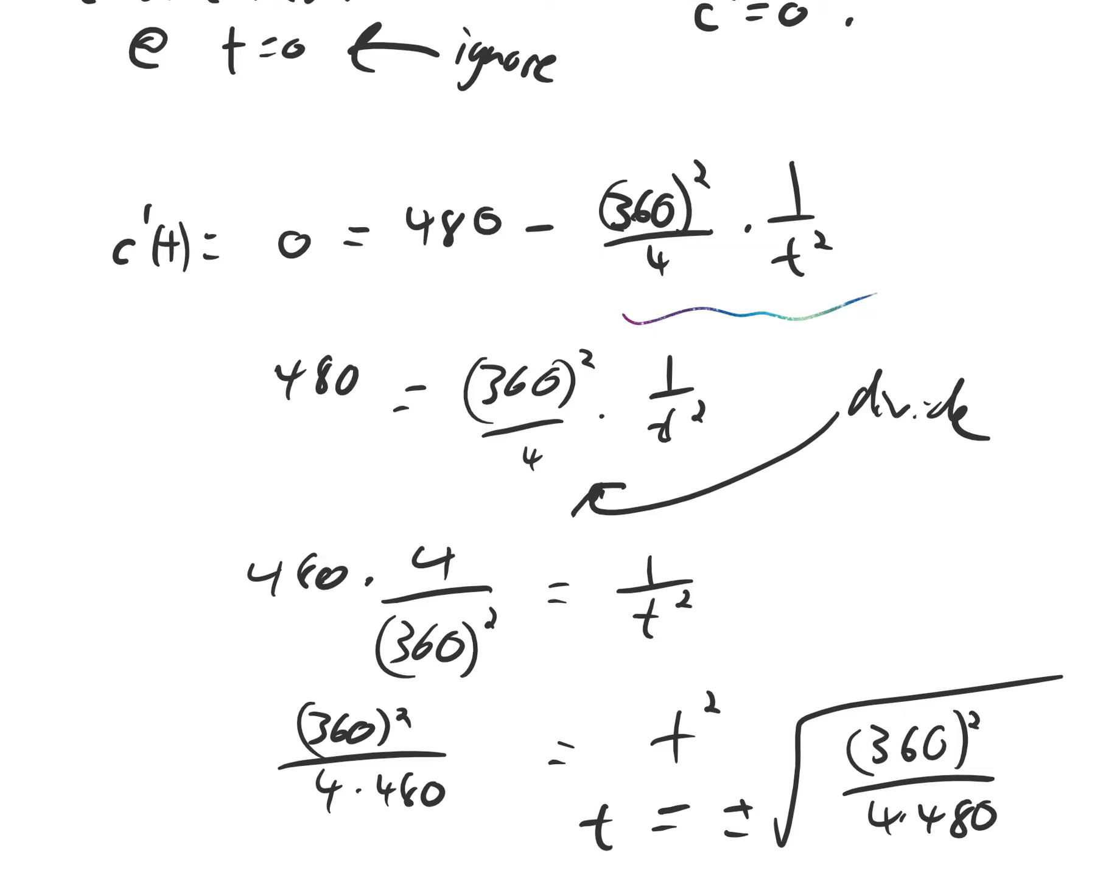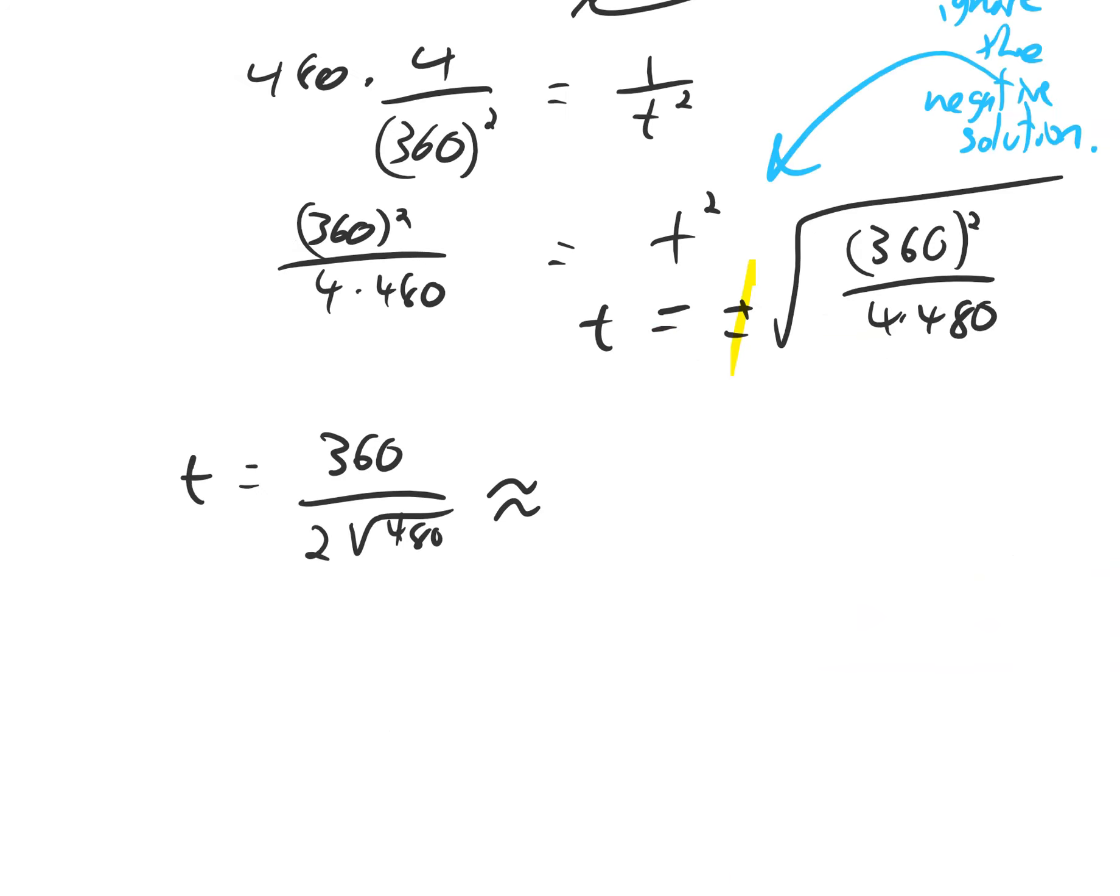Algebraically, it makes sense that we could have either plus, that t could be plus or minus and satisfy this. Because we're interested in a train moving forward in time, not backwards in time. And this is approximately 8.2 hours.